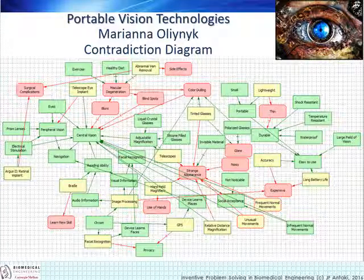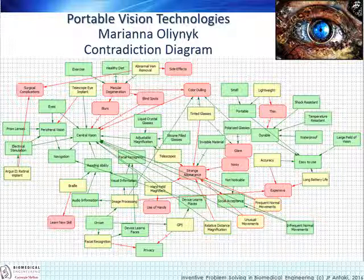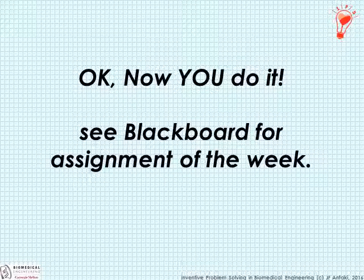Those previous examples are relatively simple; in real life, inventive problems are more complicated. Here's an example from a student who took the course a couple of semesters ago — you'll see an equal number of good things and bad things, some neither good nor bad, and many interconnections. The greater the detail and specificity in your contradiction diagram, the richer and more diverse will be the inventive ideas it produces. I encourage you to strive to break down your problem into fine detail to achieve the greatest opportunity for a brilliant inventive solution. See Blackboard for the assignment of the week, and I look forward to seeing you in person on Thursday.